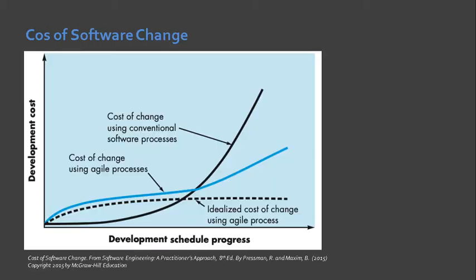As I mentioned earlier, there are two agile process models that we will discuss in our class. First, we have extreme programming, and secondly, we have Scrum. But before we proceed, let us first discuss the important reason why agile programming was proposed.